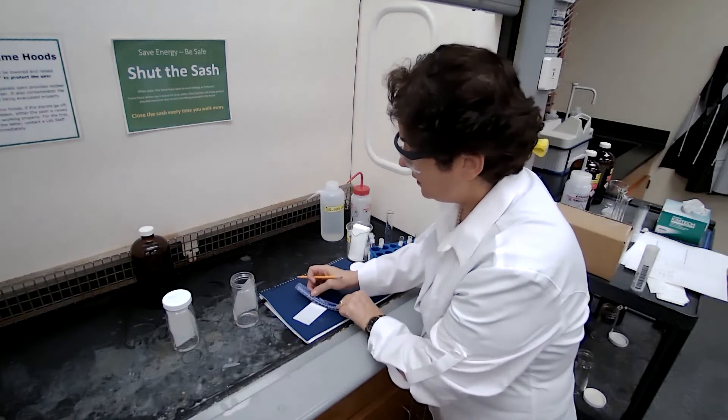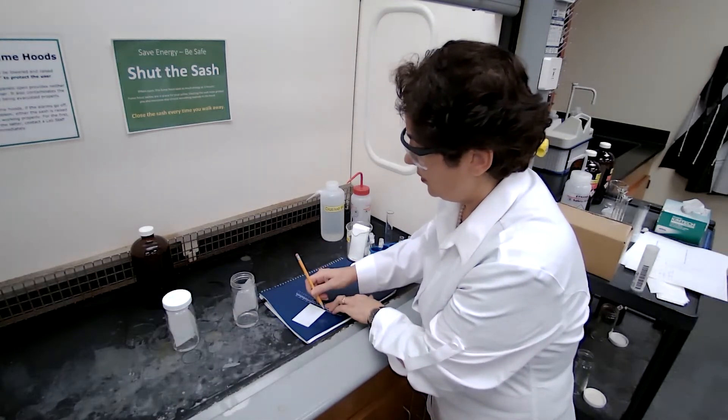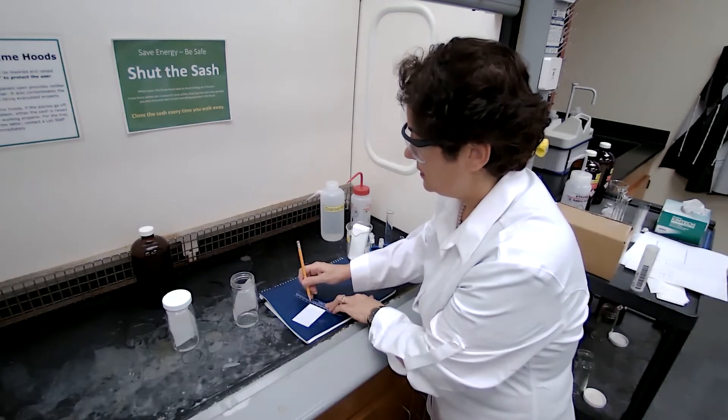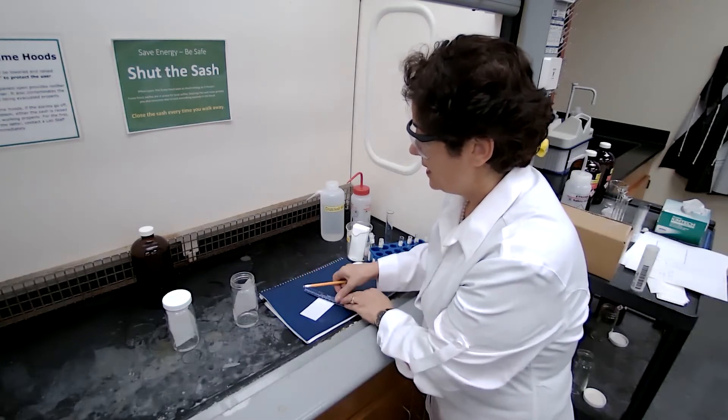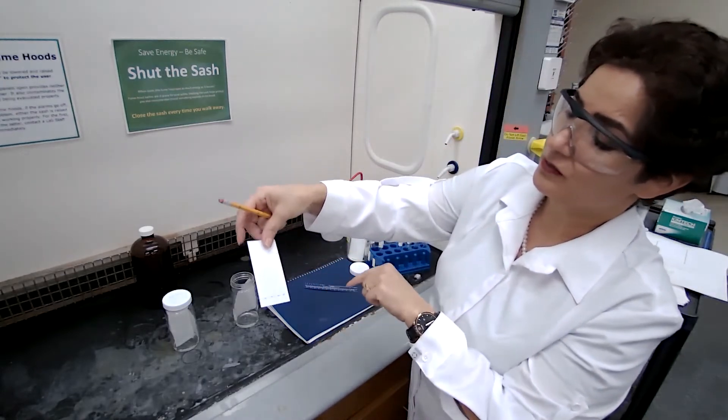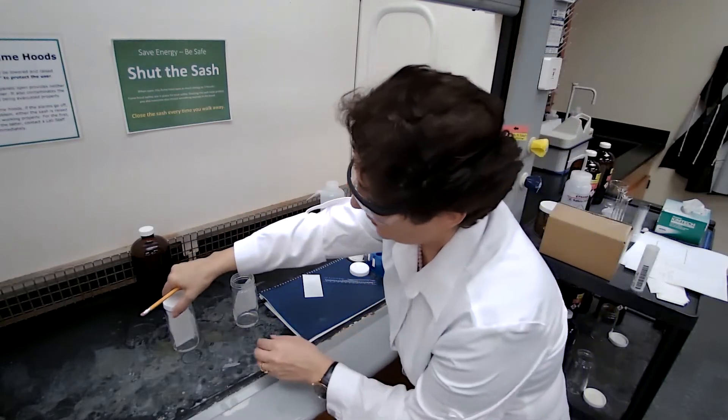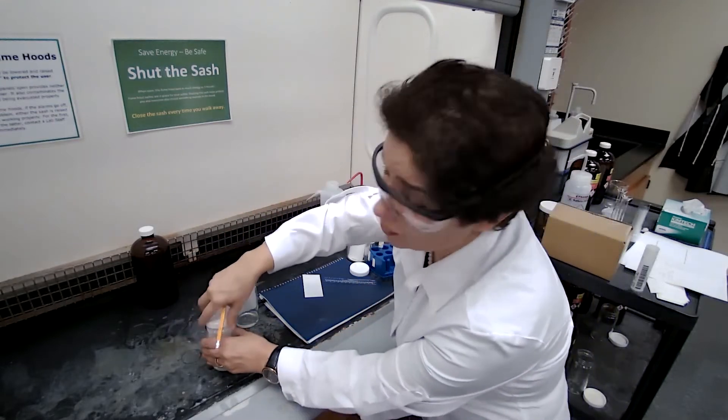So carefully we are going to just use a ruler and draw a line where the solvent travels, because as soon as it dries up, you see that line disappears from the wet plate to the dry plate.